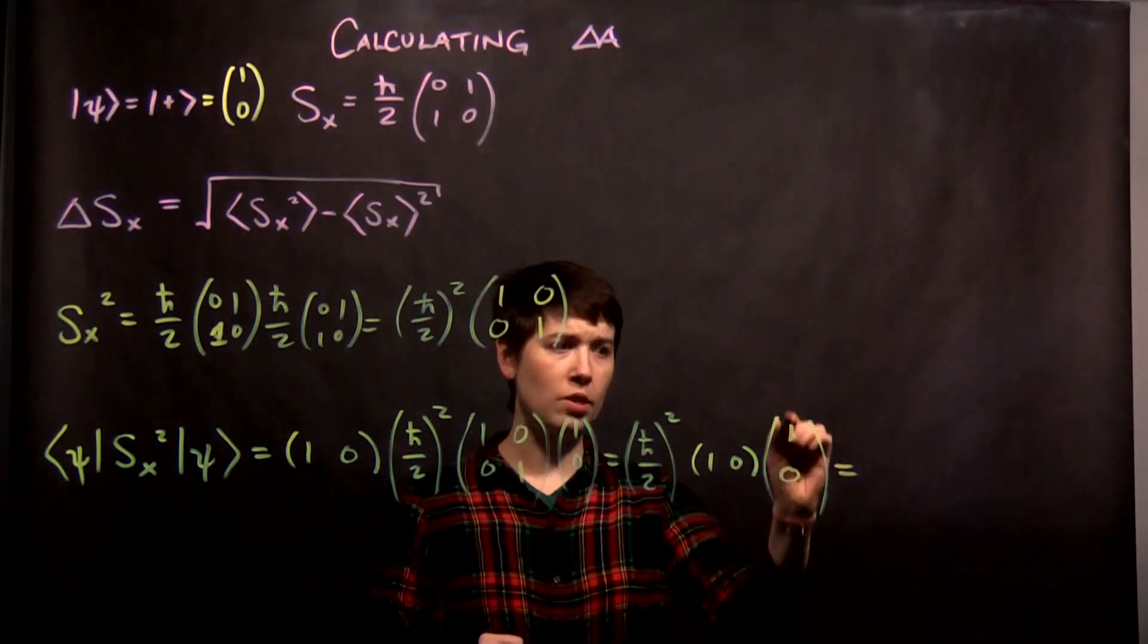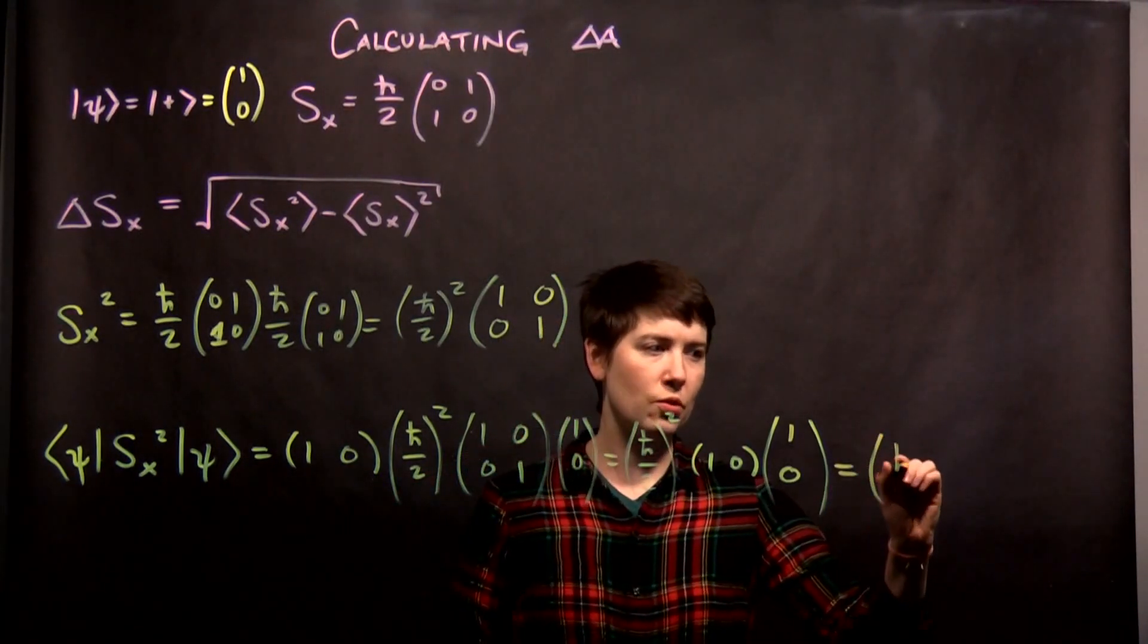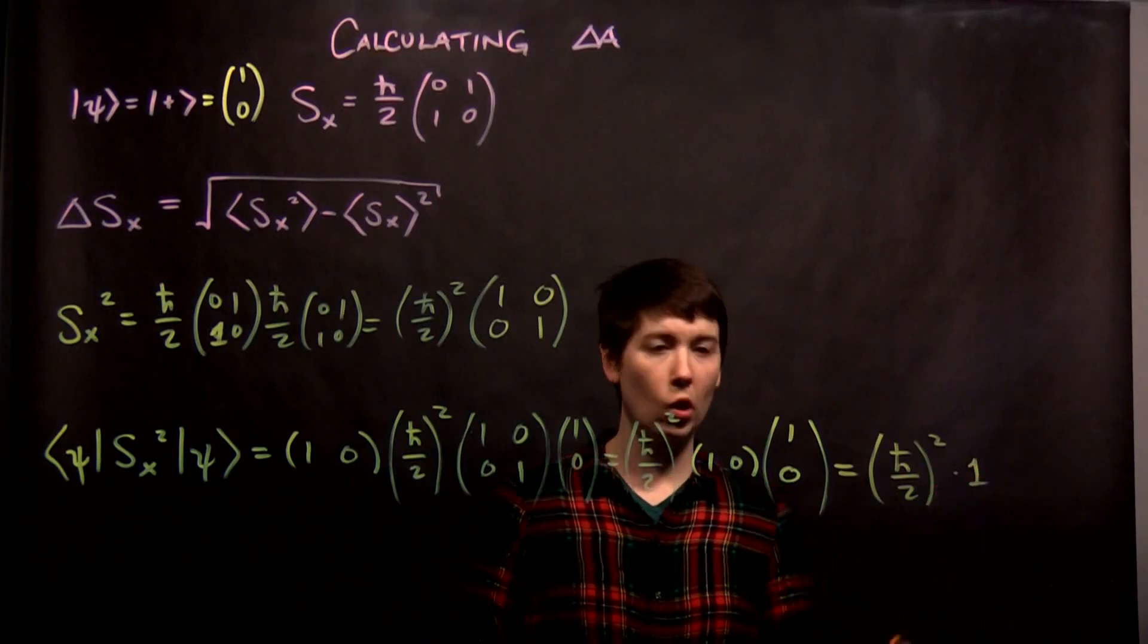So now, row times column, this gives me a scalar, it gives me a scalar of 1. So this is just equal to h-bar over 2 squared times 1. Okay, nice.